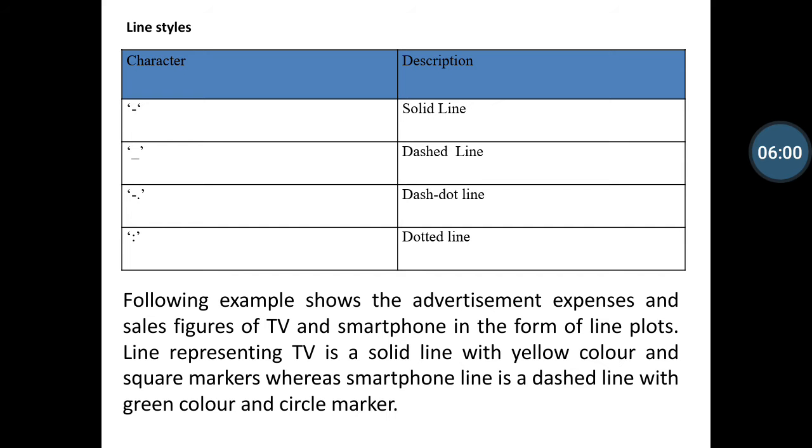Then after I am defining another table for line styling. A dash '-' is a solid line. Double dash '--' is dashed line. Dash-dot '-.' is dash-dot line for representing dash in dot lines, and colon ':' for dotted line.